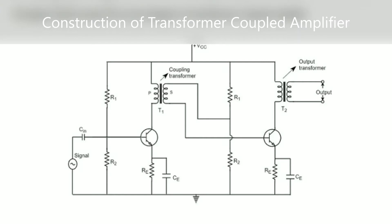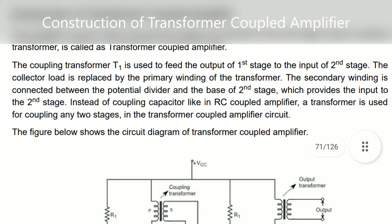In the first stage of the amplifier, an input signal is given through a capacitor C-in, which is called the coupling capacitor, to the base of the transistor. The output of the first stage is connected to a coupling transformer T1. The secondary of this coupling transformer is connected to the input of the second stage of the amplifier.